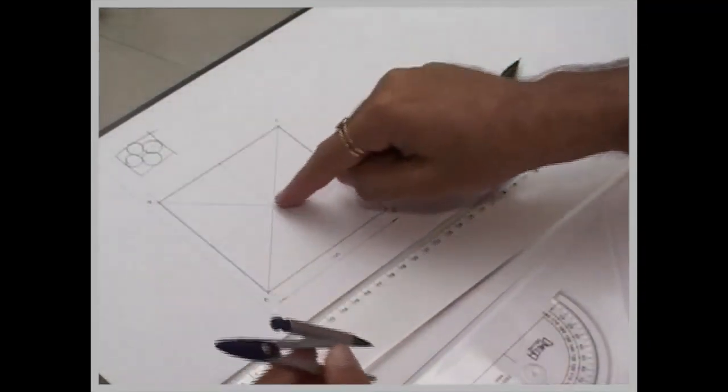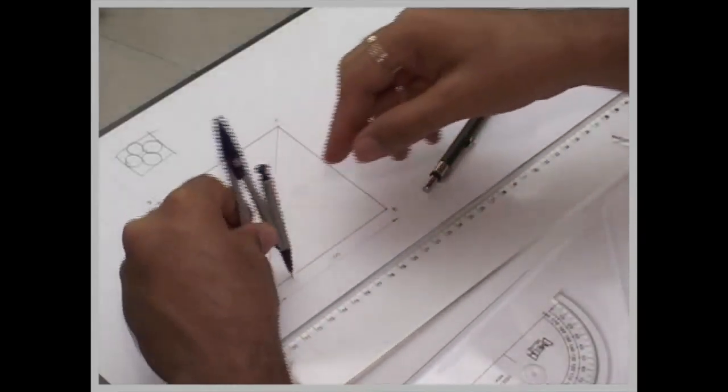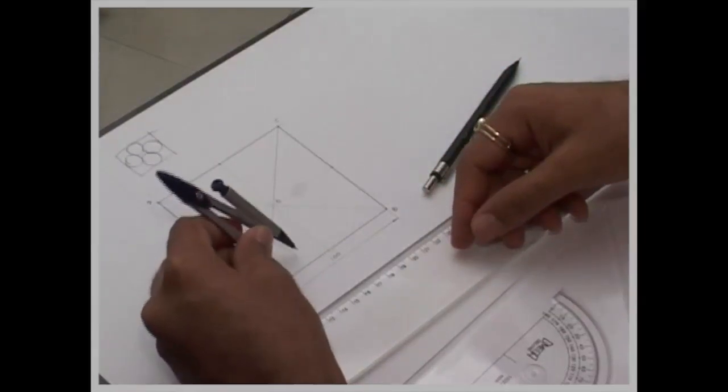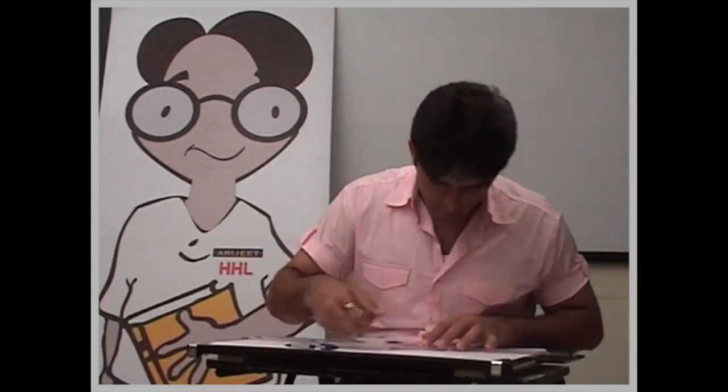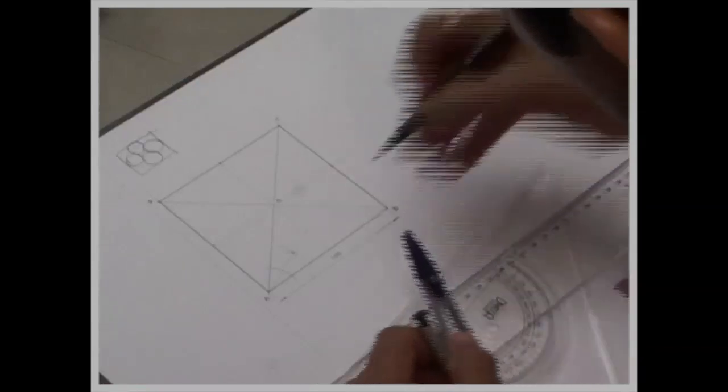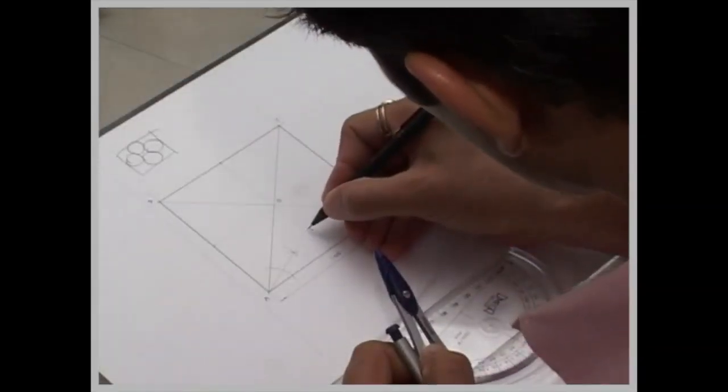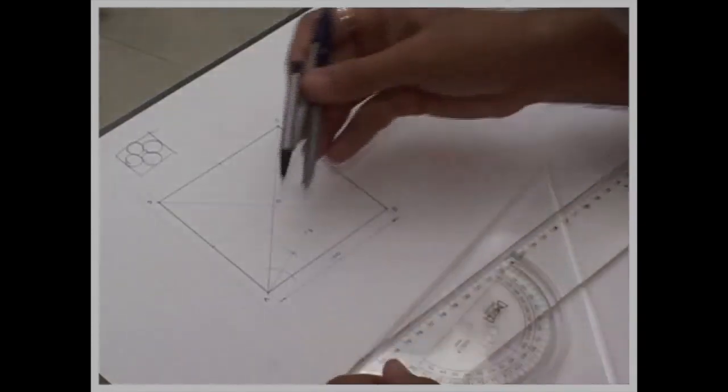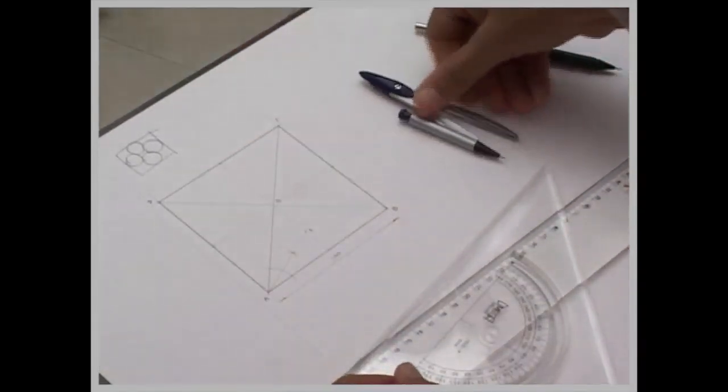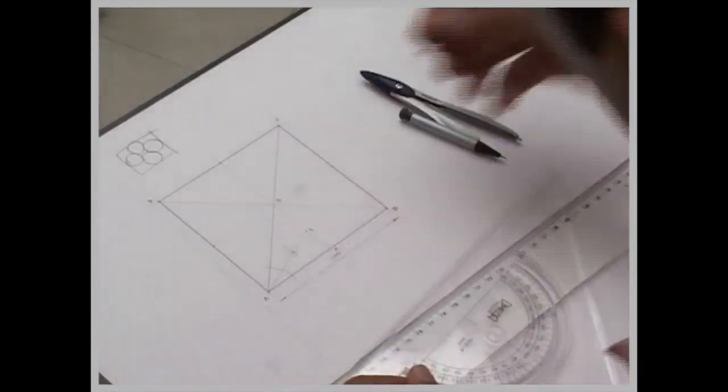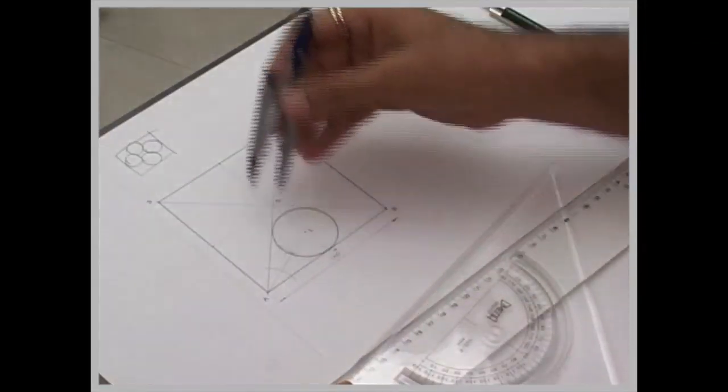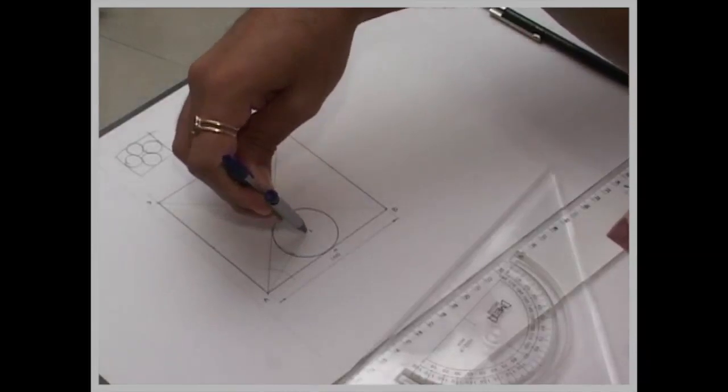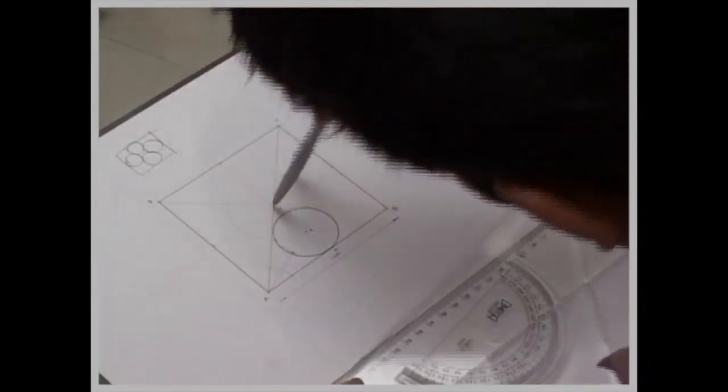Now again, same procedure, we will bisect angle O, A, B. Now we will take one, two, ten. Again, as radius, you can draw one circle. Again, I think O, two, one is radius, and we draw a very light circle.